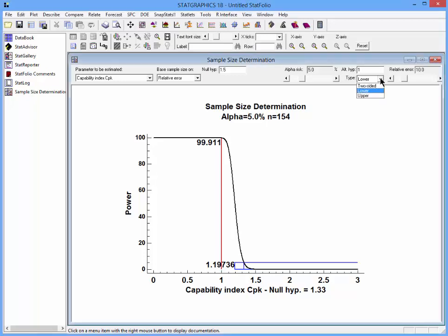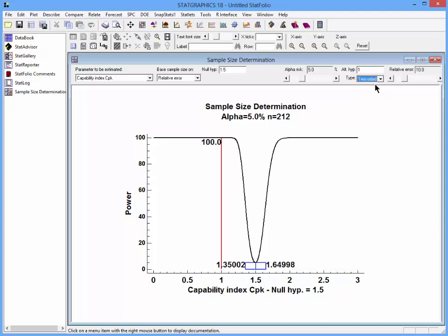Where it says type, I can specify either a two-sided confidence interval, a lower confidence bound, or an upper confidence bound. In this case, I'll select two-sided.